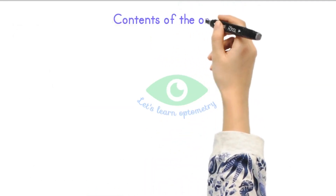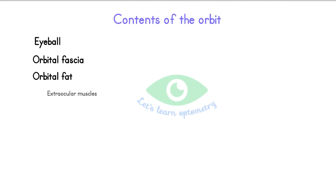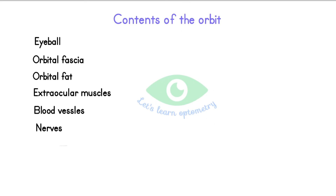Contents of the orbit. The orbit contains the following structures: eyeball, orbital fascia, orbital fat, extraocular muscles, blood vessels, nerves, lacrimal gland and the lacrimal sac.